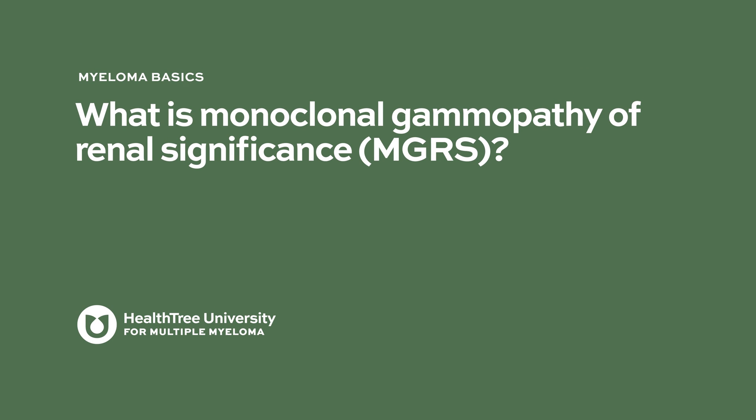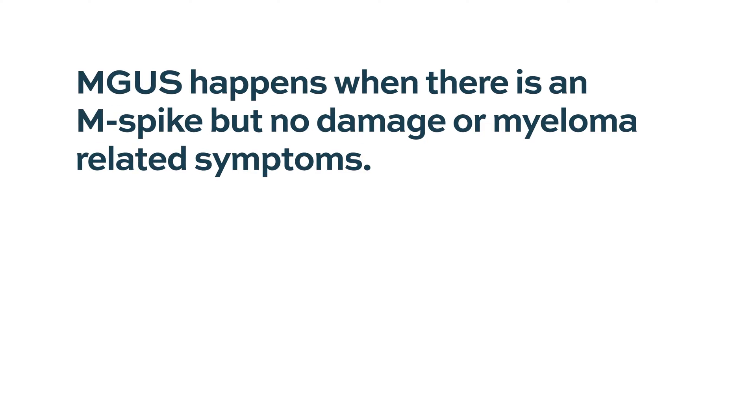What is monoclonal gammopathy of renal significance? Monoclonal gammopathy of undetermined significance means we have a protein, an M-spike, occurring with few cancer cells in the bone marrow. But there is no damage, no significance to those cells — those patients do not have any myeloma-related symptoms.